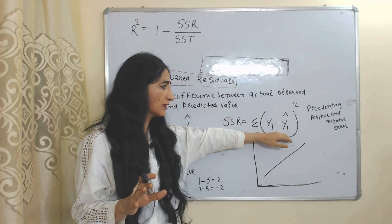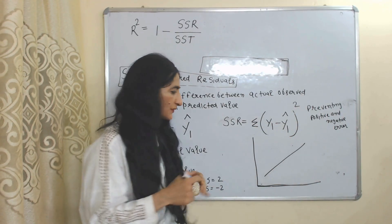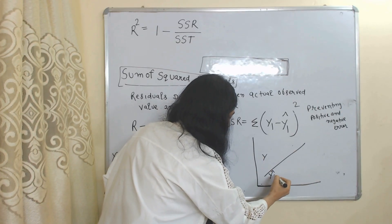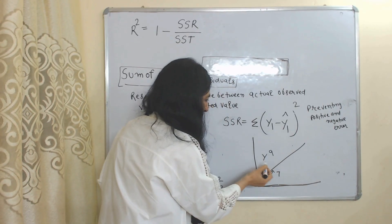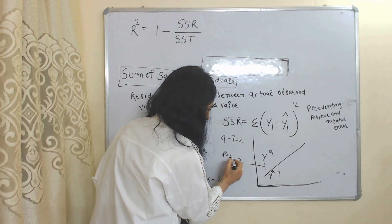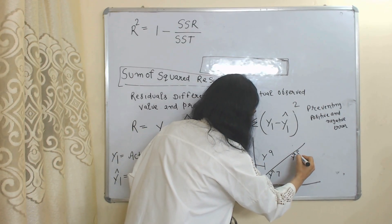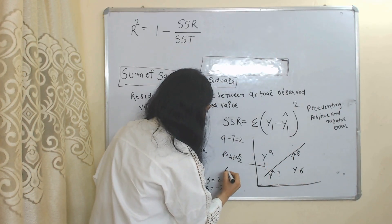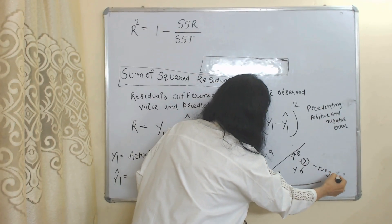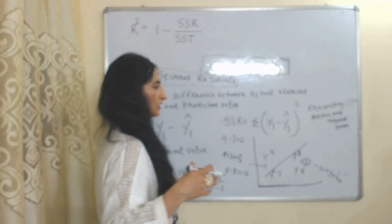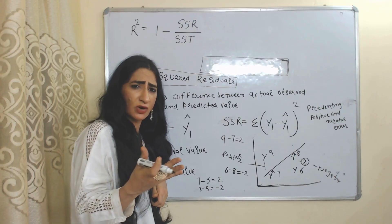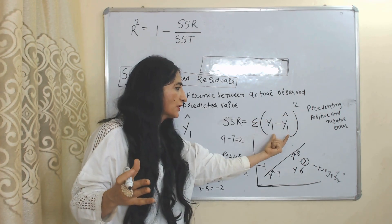But why do we square the residuals? Consider our regression line: suppose Y1-hat equals 7 and the actual observed value is 9 — the residual is +2. But another point might give a residual of -2. We have both positive and negative residuals, so in order to avoid the plus and minus signs, we square the residuals.